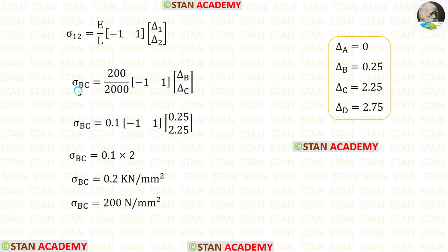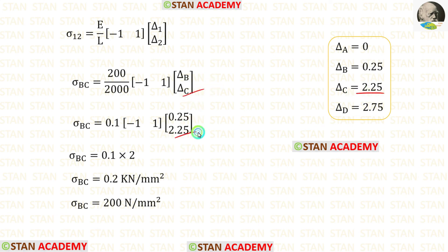Now let us find sigma BC. The length of BC is 2000. Delta B is 0.25 and delta C is 2.25. After multiplying the matrices we get 2. Finally, sigma BC equals 200 N/mm².